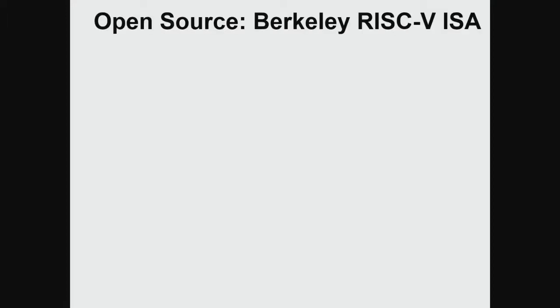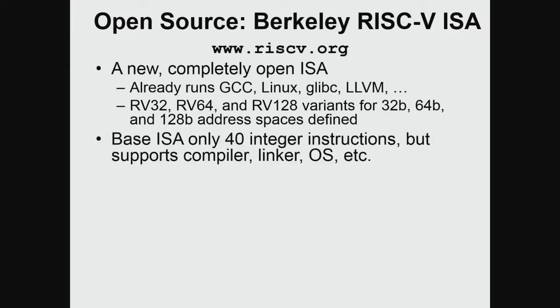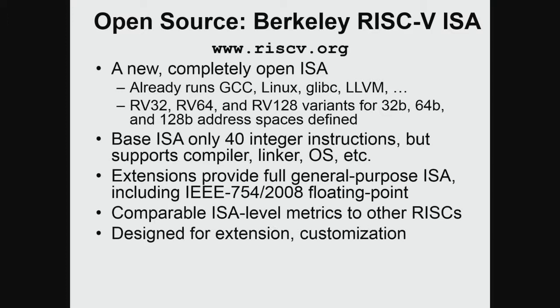We also build processors in Chisel and put them in open source. This is the group of Krste Asanović building RISC-V ISA — a completely free and open instruction set architecture downloadable from RISC-V.org that runs a full software stack. It is built in the spirit of Berkeley RISC and has only about 40 instructions but supports a compiler, linker, and everything else. It is built for extensions, has full floating point support, and is comparable to other ISAs. There are several working silicon prototypes.